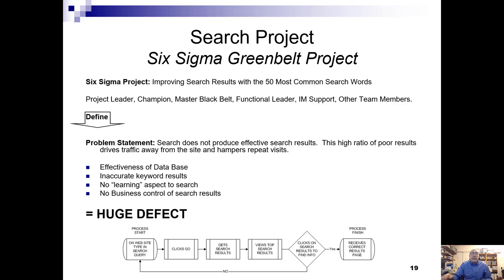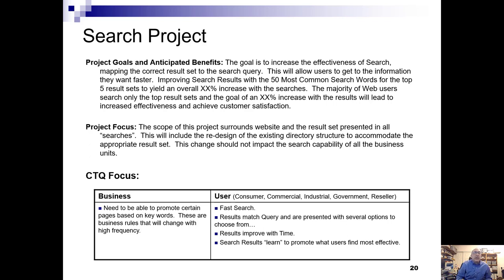On the bottom you can see the high level process. For the project goals, it's to increase the effectiveness of search by mapping the correct results set to the search query. This will allow users to get to the information they want faster. Improving the search results will increase effectiveness by 85% — the objective is to lead to increased effectiveness and to achieve customer satisfaction. The project focus surrounds the website and the results set presented in all searches. This will include the redesign of the site to accommodate the appropriate results set.